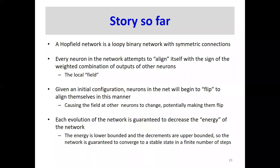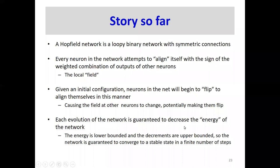Here's the story so far. A Hopfield network is a loopy binary network with symmetric connections. Every neuron attempts to align itself with the sign of the weighted combination of outputs of other neurons — the local field. Given an initial configuration, neurons will begin to flip to align themselves to their field. But when they do so, this causes the field at other neurons to change, potentially making those flip, which can in turn cause the original neuron to flip. Every evolution step is guaranteed to decrease the energy. The energy is lower bounded and decrements are upper bounded. So the network is guaranteed to converge to a stable state in a finite number of steps.